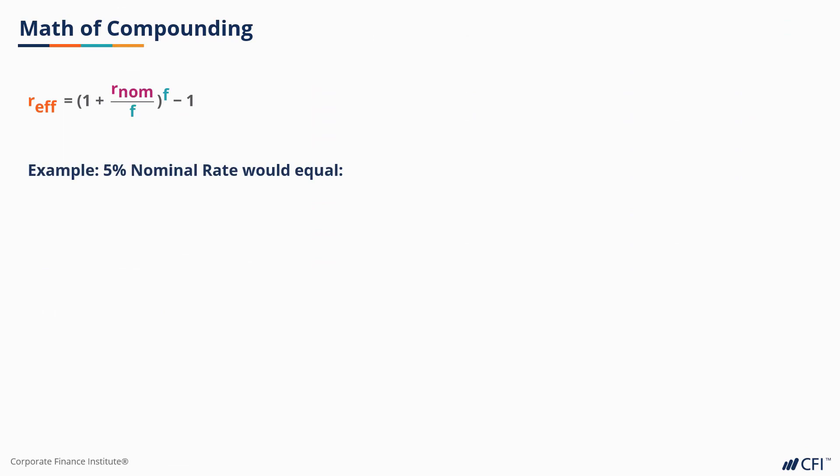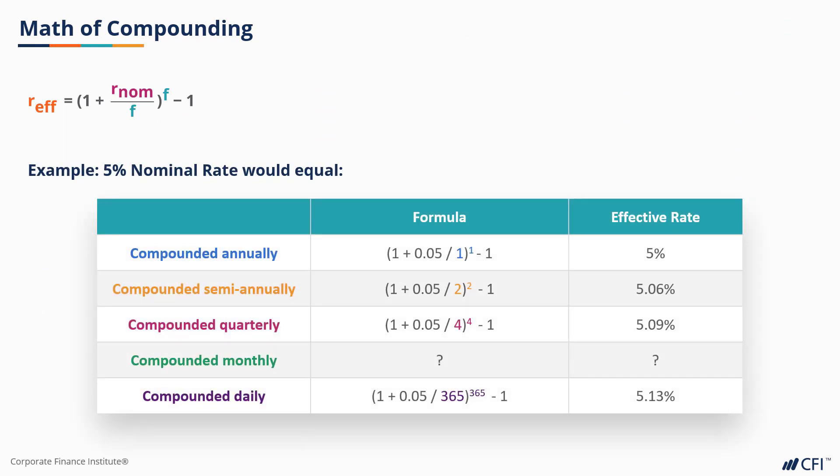To make it clearer, please look at the following table. Using a 5% nominal rate but different compounding frequencies, you can see the effective rates can be quite different. Let's look at the table for semiannual compounding. A 5% nominal rate would become (1 + 0.05/2)^2 - 1, which gives you an effective rate of 5.06%. If we look at quarterly compounding using the same 5% nominal rate, the effective rate would be (1 + 0.05/4)^4 - 1, which gives you an effective rate of 5.09%.